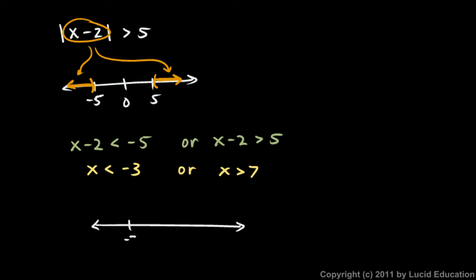Let's mark this: negative 3, 0, and 7 over here. We want all the numbers less than negative 3, like that, and all the numbers greater than 7. We use parentheses because we're not including negative 3 or 7. You could write it as: x is less than negative 3, or x is greater than 7. It's actually more common to state it with the x on the left.